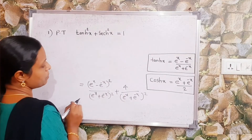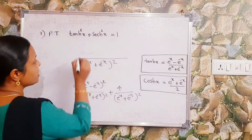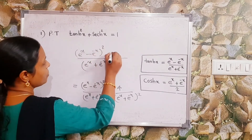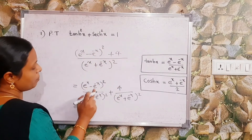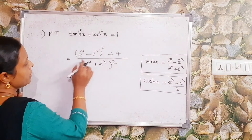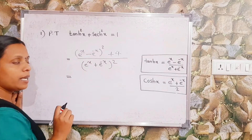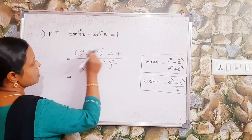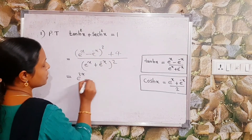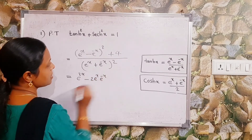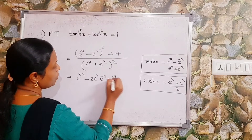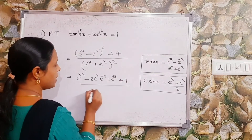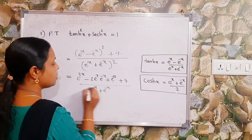Here the denominators are the same, so in the numerator we write (e^x - e^(-x))² + 4. This is of the form (a - b)², and we know that (a - b)² = a² - 2ab + b². So we expand it as e^(2x) - 2·e^x·e^(-x) + e^(-2x), plus 4, all divided by (e^x + e^(-x))².